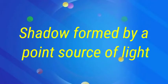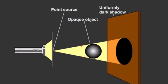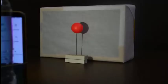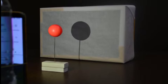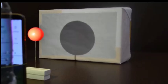Take a ball and place it between a point source of light, that is a torch or a bulb, and a screen. Turn on the torch or the bulb. You will see a dark shadow on the screen. The size of the shadow will be bigger than the size of the object, that is, the ball. The shadow will be of the same shape as the object.